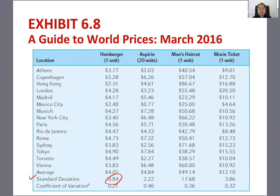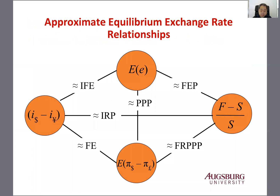Price differences can determine both interest rate differences and exchange rate differences. This is an approximate equilibrium — it won't hold exactly, but the expected exchange rate changes should be close to interest rate changes and also close to expected inflation changes.